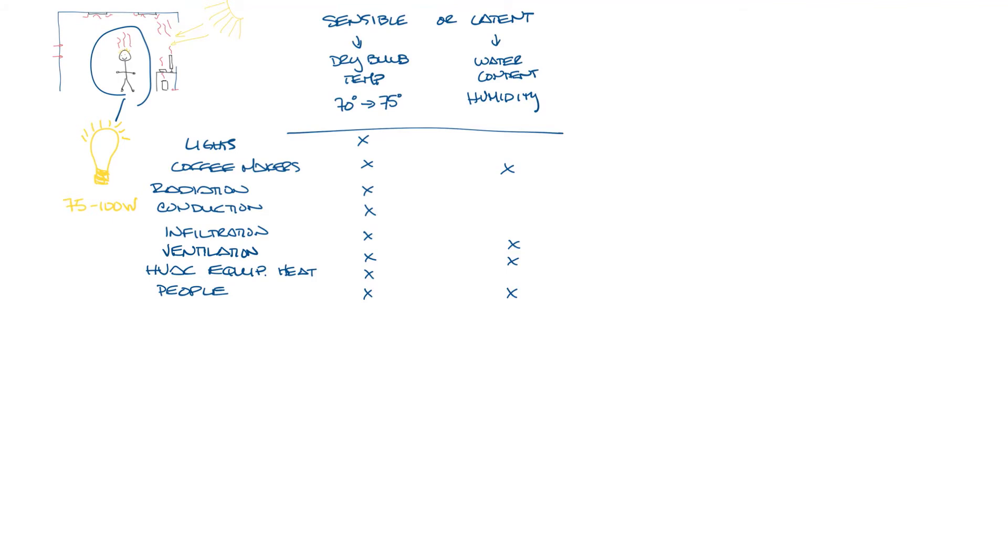To know how much capacity your HVAC system needs, you'll need to know the load of the building. The load equation is the load, Q, is equal to 1.085 times the CFM times delta T. The load in the space that you need to offset with your HVAC system to maintain comfort, Q, is equal to 1.085, which is a constant for buildings at sea level, times the airflow volume times the difference in temperature between supply temperature and the temperature you want the space to be.